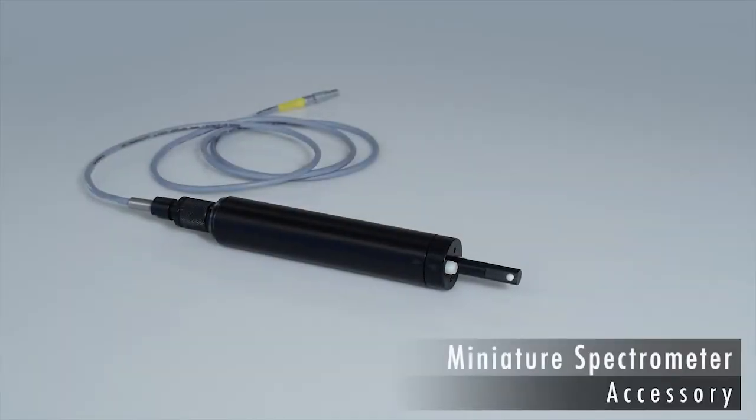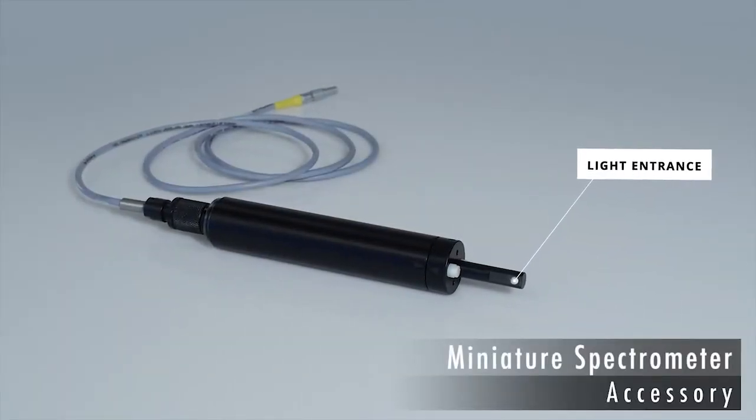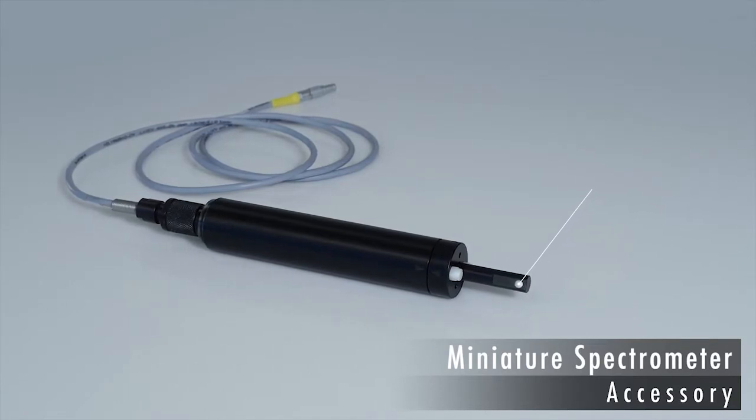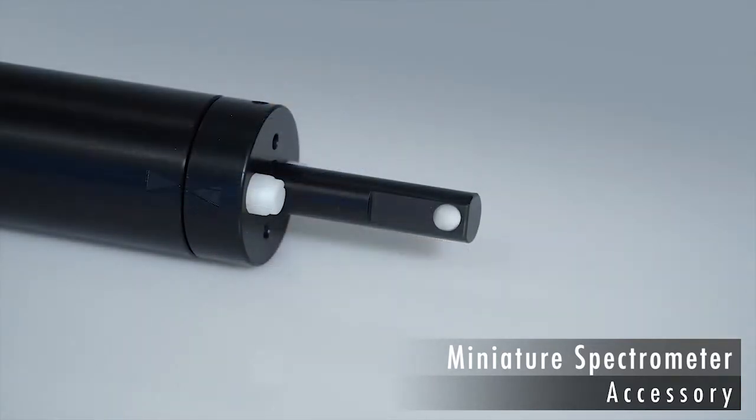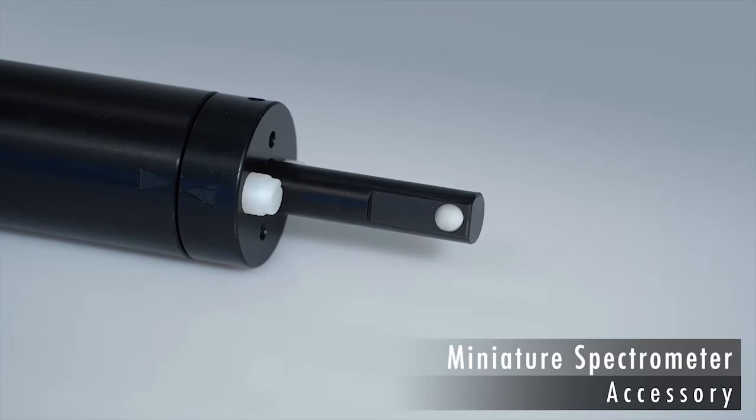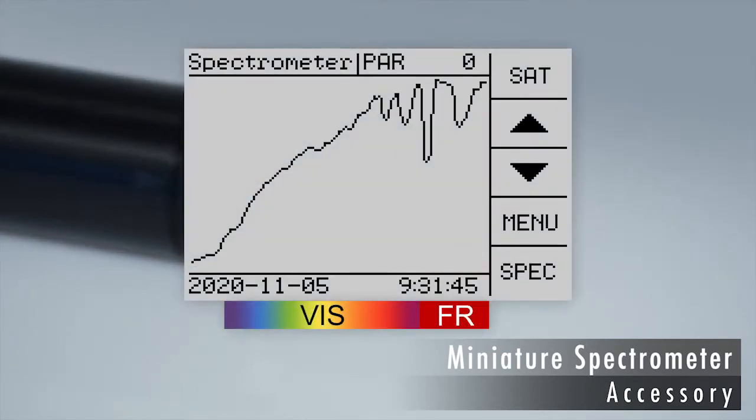The miniature spectrometer measures light spectra. The absence of moving parts makes the spectrometer ideal for outdoor studies. The spectrum includes the visible range which plants use for photosynthesis. It also covers the far red range, which is important for developmental processes controlled by the phytochrome photoreceptors.